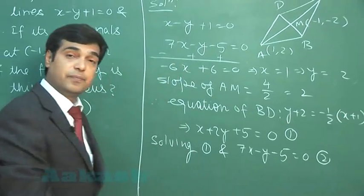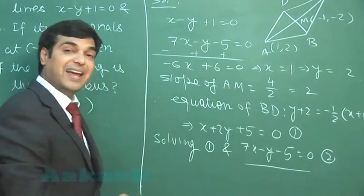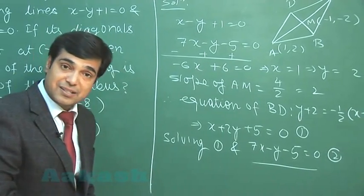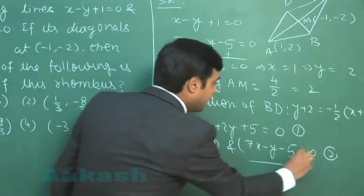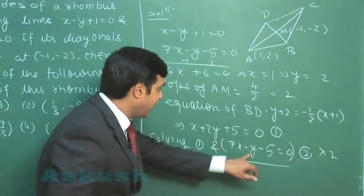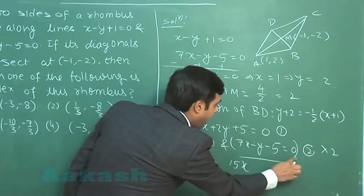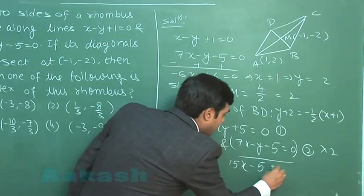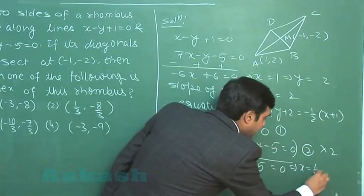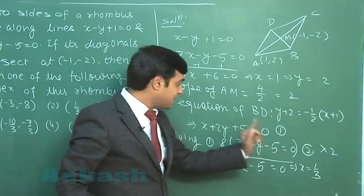Solving these two we can get the values for x and y. This point is clear. So let us start it. Simply multiplying this equation with 2 so that y is cancelled, we get 15x equals 5, that is x comes as 1 by 3. So the value for x is 1 by 3.